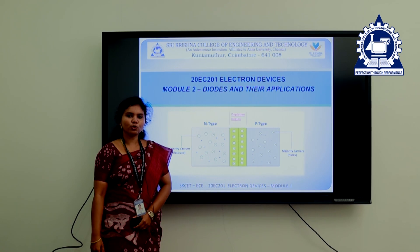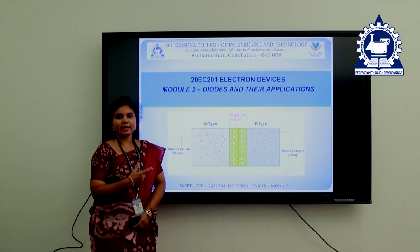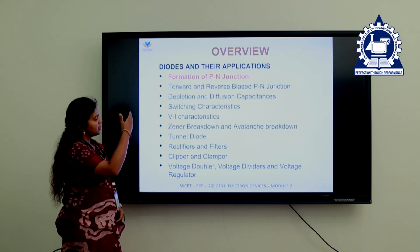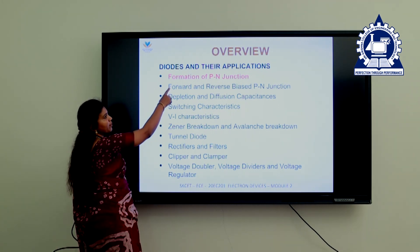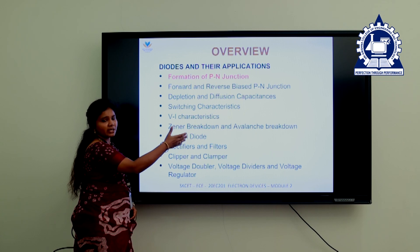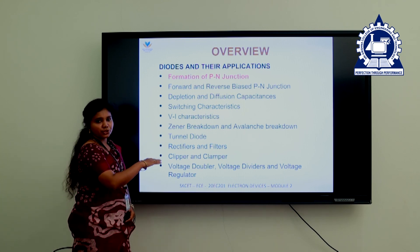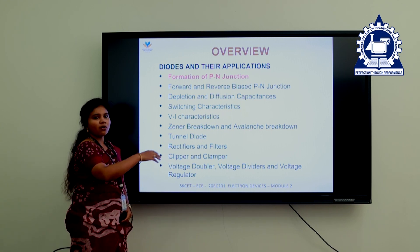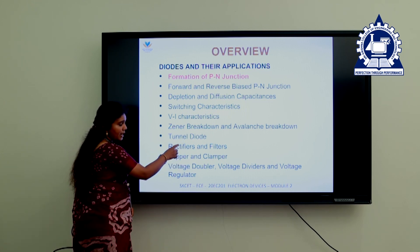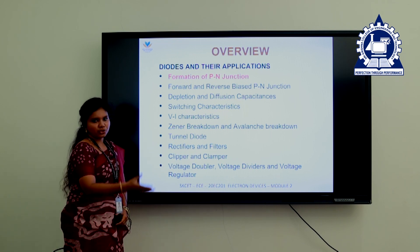Good morning students. In module 2 of electron devices, we are going to discuss P-N junction diode, its characteristics and applications. We will be dealing with formation of P-N junction diode, then its characteristics. We are going to discuss the voltage and current characteristics of P-N junction diode as well as Zener diode. Zener diode is an advancement or an alternative to P-N junction diode, followed by tunnel diodes and applications of diodes, namely rectifiers, filters, clippers, clampers — all these are wave shaping circuits.